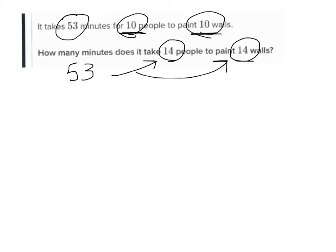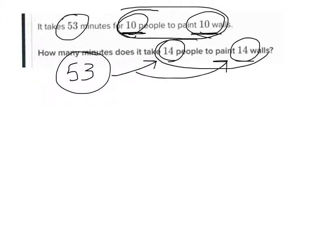It's still going to take 53 minutes because you still have 1 person per wall. It's 53 minutes per wall per person. So anytime you see equal numbers of people and walls — like 10 and 10, or 14 and 14, or 5 and 5, or 7 and 7 — the time will be the same.